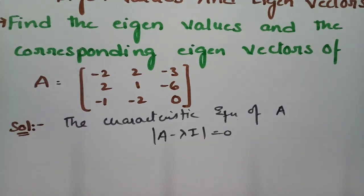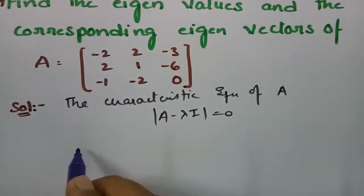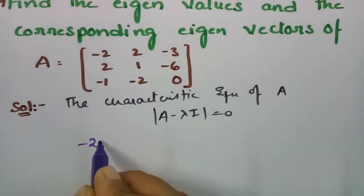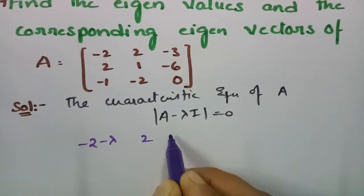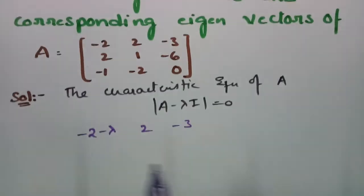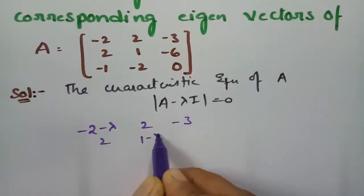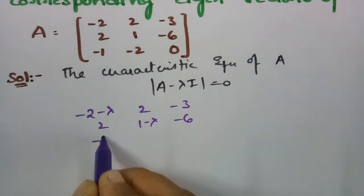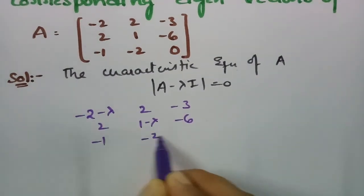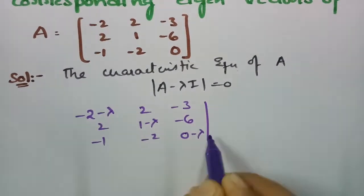For that we have to subtract lambda from the diagonal elements. The matrix becomes: (−2−λ), 2, −3 in the first row; 2, (1−λ), −6 in the second row; and −1, −2, (0−λ) in the third row.